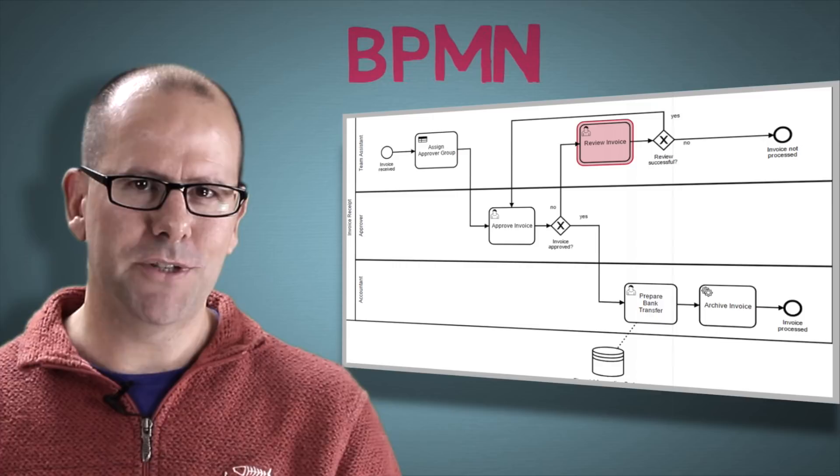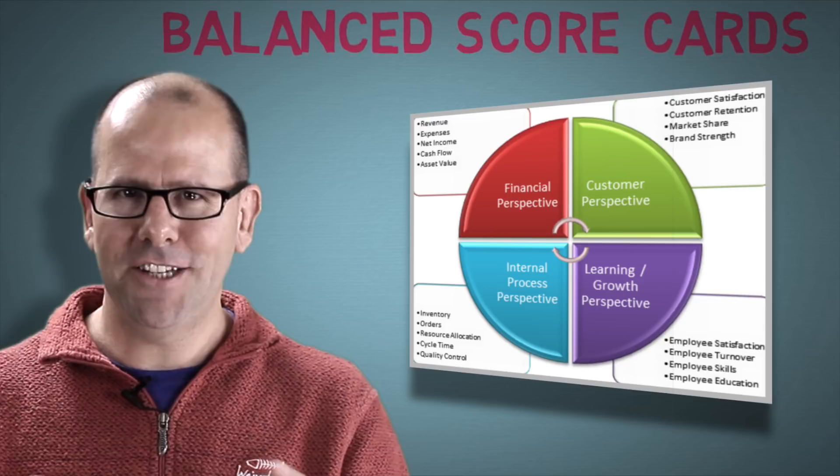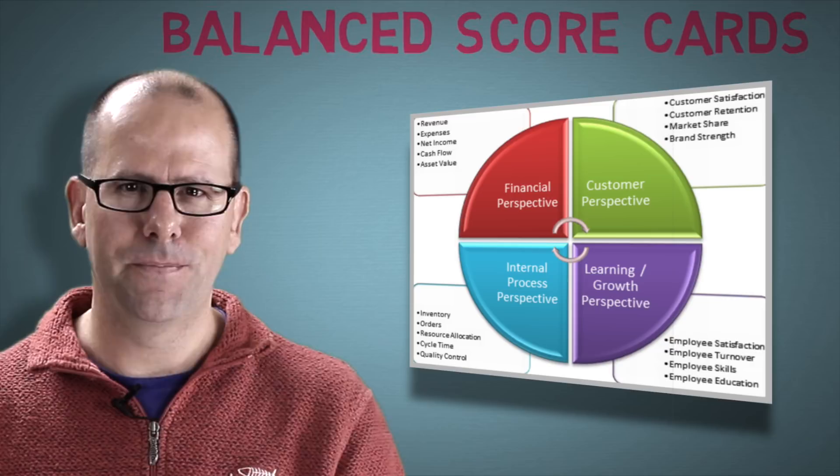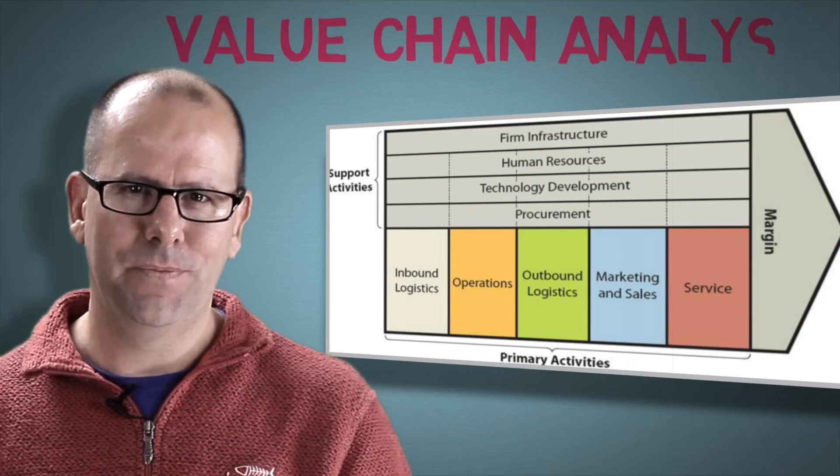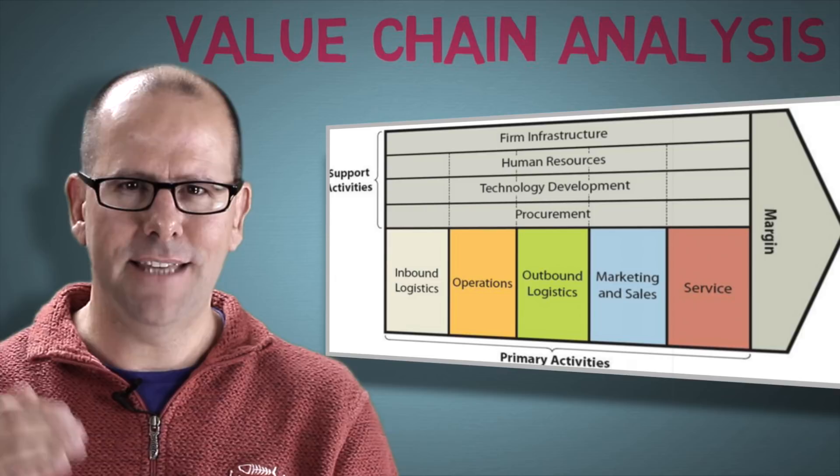Next, balanced scorecards. This is a simple and easy-to-use performance management tool that uses a combination of financial and non-financial metrics. I can't get into how to create one in this video, but go to 12manage.com and look it up. Next, value chain analysis. This is an important tool to help organizations understand — and sometimes restructure — how they add value and meet their objectives. If you're a senior manager or leader in an organization, this is an absolute must. Go look it up and learn more.